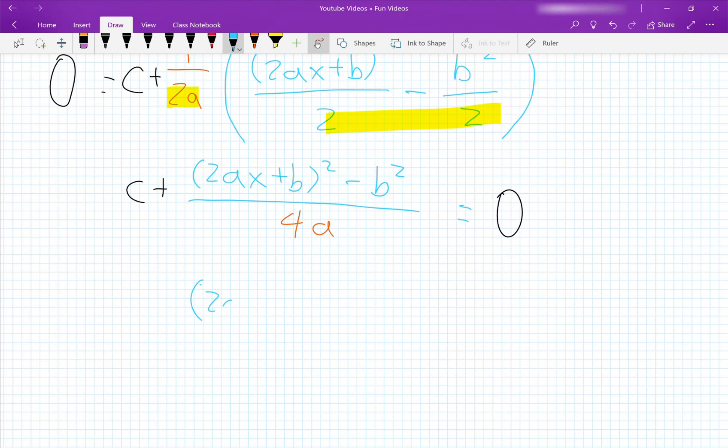This will give us (2ax plus b) squared minus b squared equals... So basically, we can take out the c, take out the 4a, and then move them to the other side. So it becomes negative 4ac.